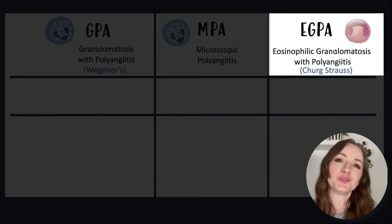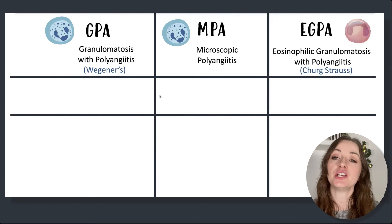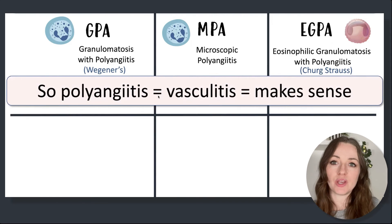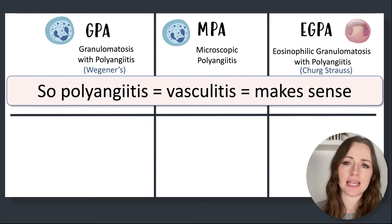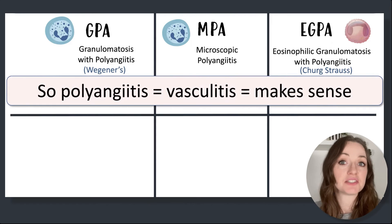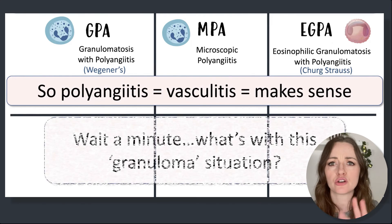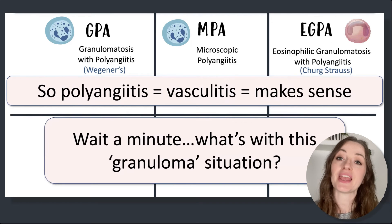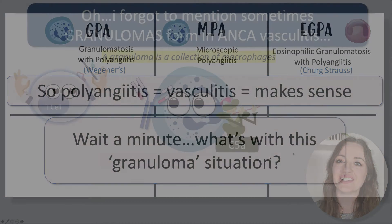These names do seem like a bit of a mouthful, but they actually make a lot of sense. Polyangiitis we can translate into multiple inflamed blood vessels — so that's the same as vasculitis. Too easy. But something a little bit more mysterious is this granuloma situation. Both GPA and eGPA have granulomas in their titles — so what's that all about?